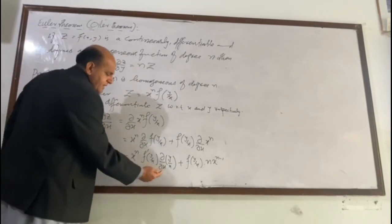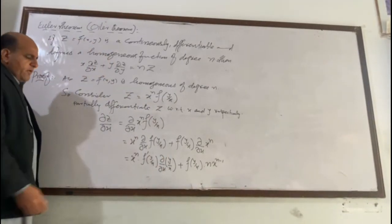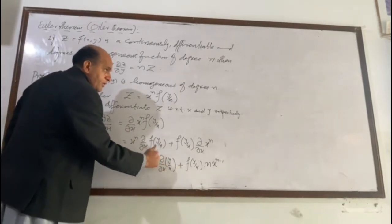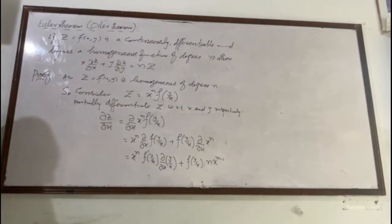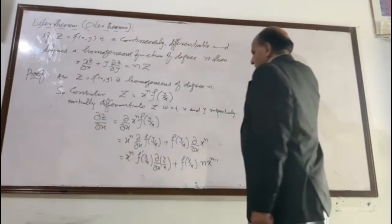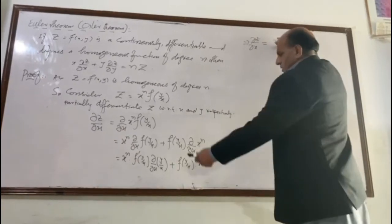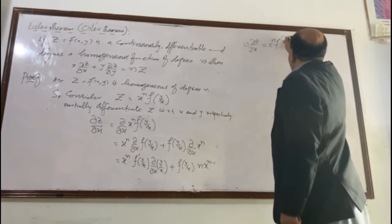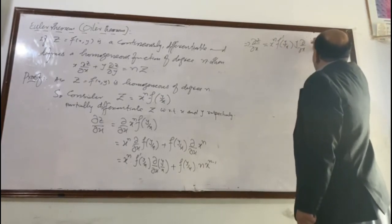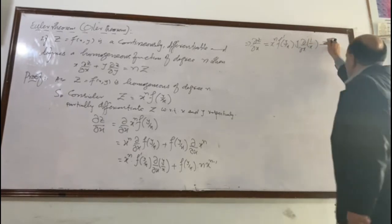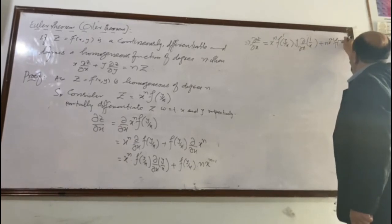We are differentiating with respect to x, so we treat y as a constant. We take y out from the partial derivative operator ∂/∂x and differentiate 1/x. So, ∂z/∂x = x^n · f′(y/x) · y · (∂/∂x)(1/x) plus n · x^(n−1) · f(y/x). Applying the reciprocal rule, we place a negative sign in the numerator and square the denominator.